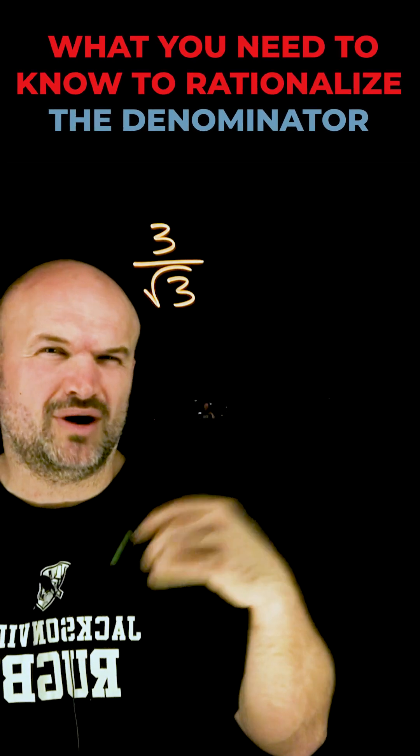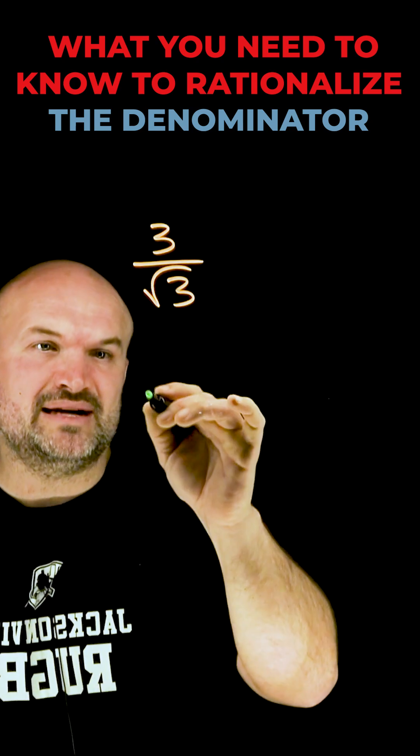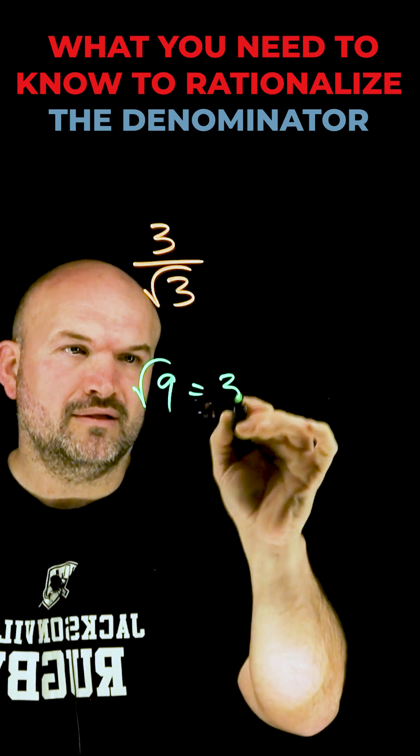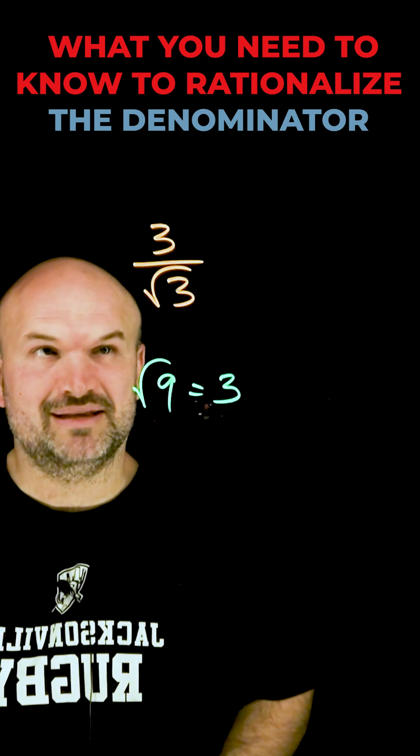So to do that, I need to understand how can I eliminate the square root in my denominator? Well, I know if I have the square root of a number, then that square root is going to be eliminated.